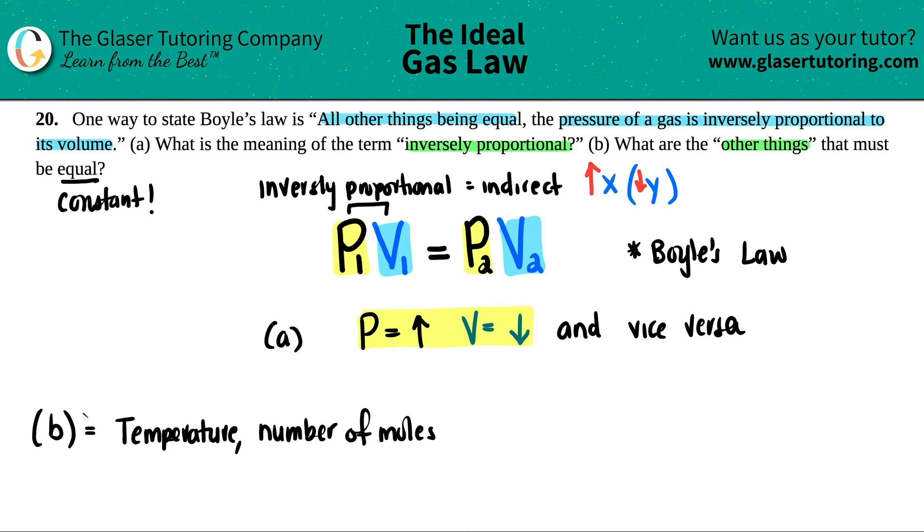And then letter b, we already took care of that. What are the other things that must be equal, aka constant? Just the other two variables: temperature and number of moles. Get rid of them because Boyle's law only talked about pressure and volume, and that's it.